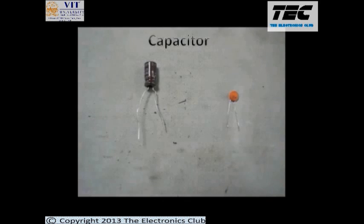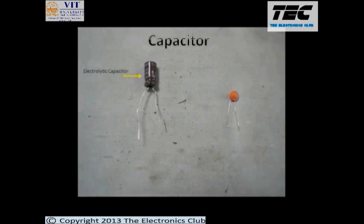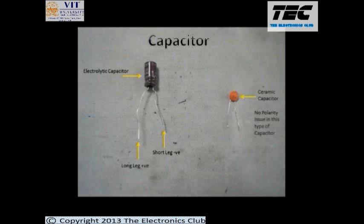Now we will see how to determine different terminals of a capacitor. This is an electrolytic capacitor in which the long leg is the positive terminal while the shorter leg is the negative terminal. This is a ceramic capacitor and it has no polarity issue.